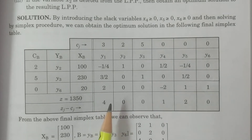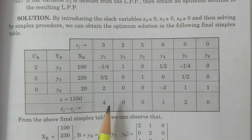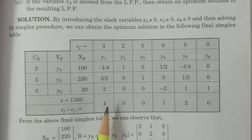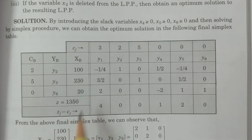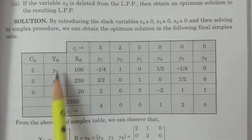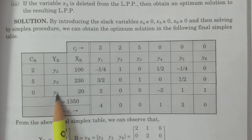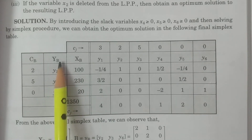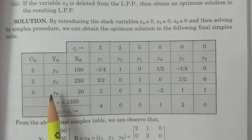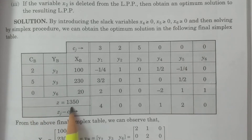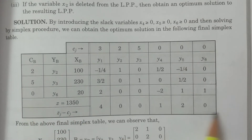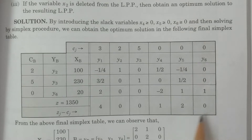We consider the solution as usual from the last simplex table. The basis consists of y2, y3, y6 — these three form the basis matrix. The corresponding cost gives z equal to 1350. The zj minus cj net evaluation values are all greater than or equal to 0. We consider this value is 7.